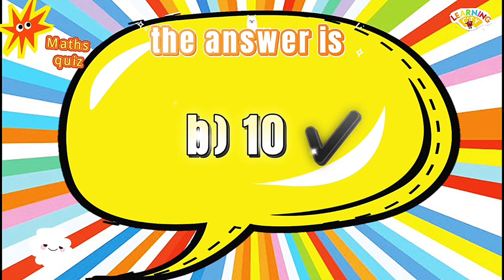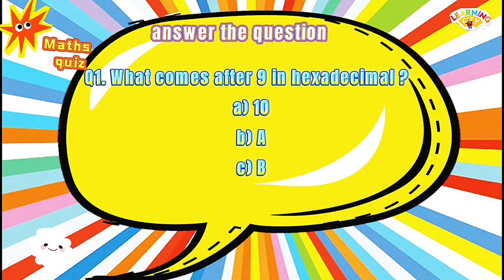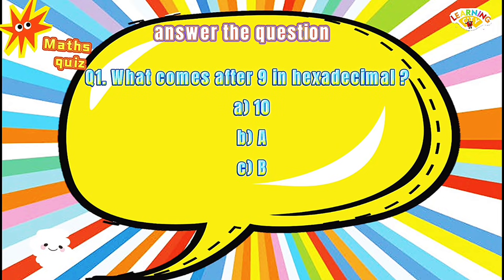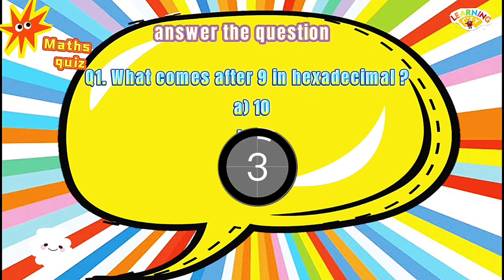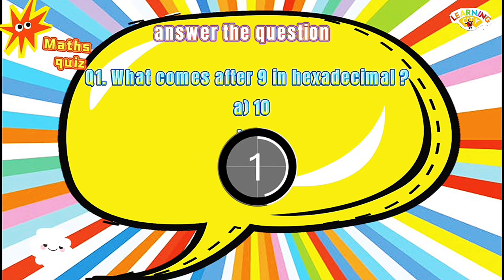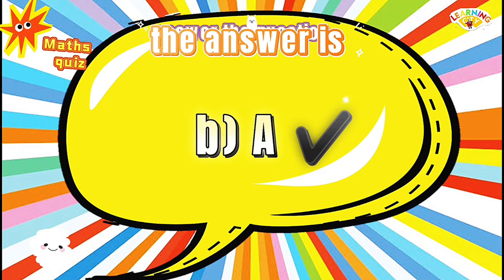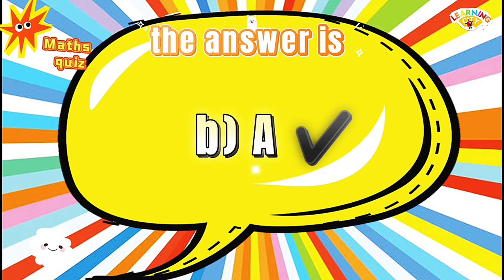Next question: What comes after 9 in hexadecimal? Options: A) 10, B) A. The correct answer is B, A.